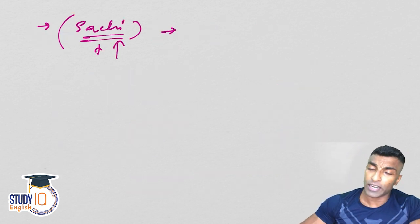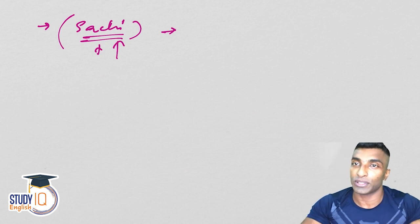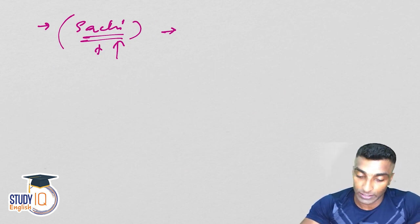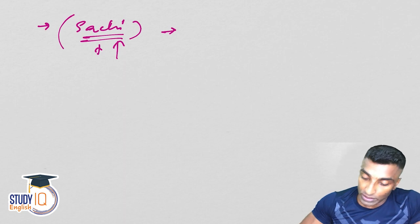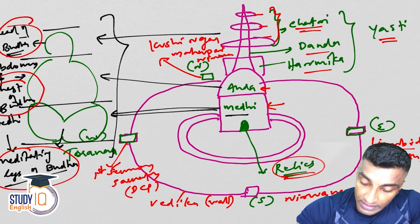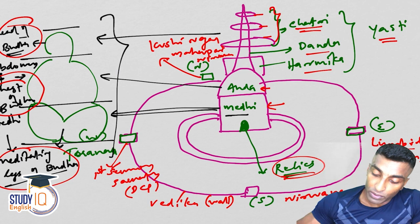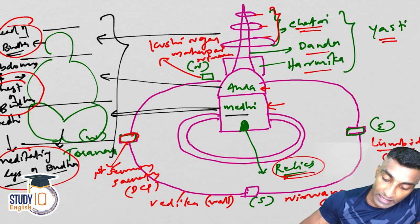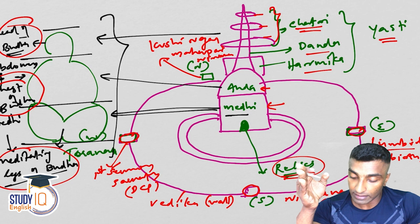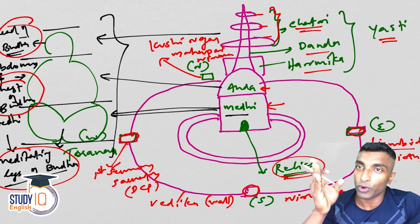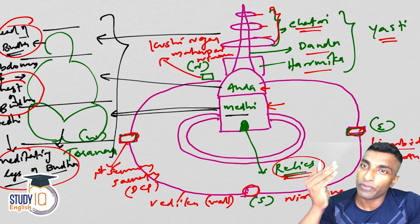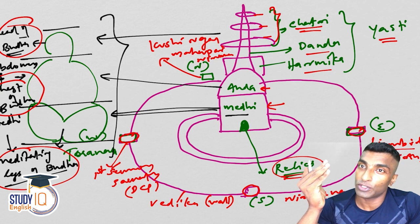Not only these nine, but close to 84,000 Stupas were actually constructed. We discussed about the Sanchi Stupa and this figure we have discussed. We talked about these gates — what these four gates signify: East, South, West and North. Four gates, four Tauranas — four gates signify four different life stages of Buddha.